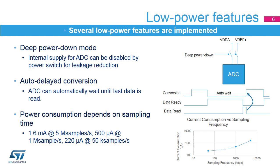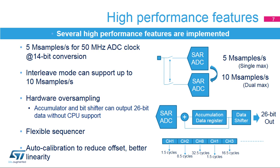The power consumption is a function of the sampling frequency. For low sampling rates, the current consumption is reduced almost proportionally. The ADC supports up to 5 mega-samples per second of 14-bit conversion. By using dual-interleaved mode, it can be extended to 10 mega-samples per second. The ADC includes oversampling hardware which accumulates data and then divides without CPU help. The oversampler can accommodate from 2 to 1024 samples and right-shift from 1 to 8 binary digits.